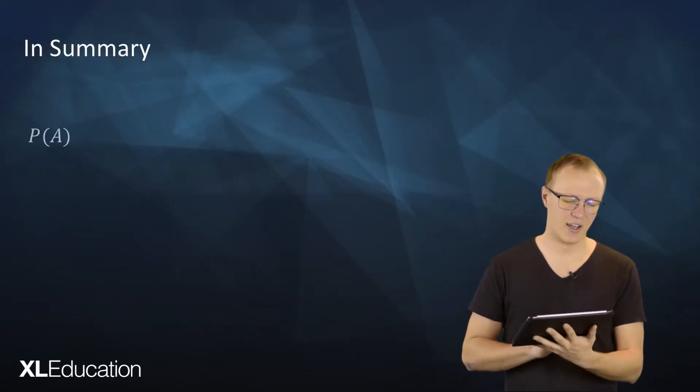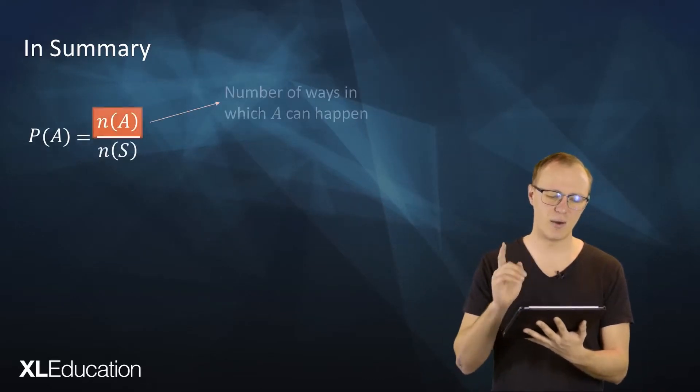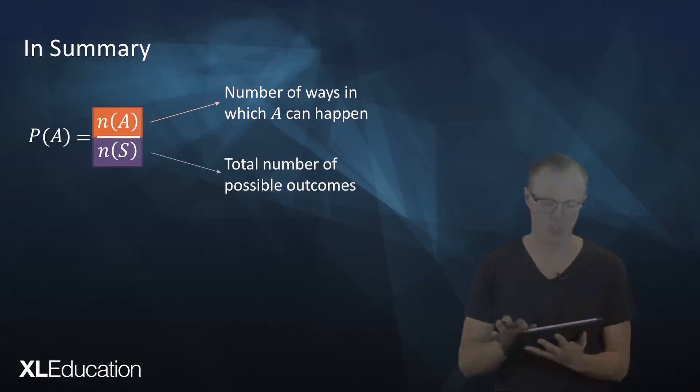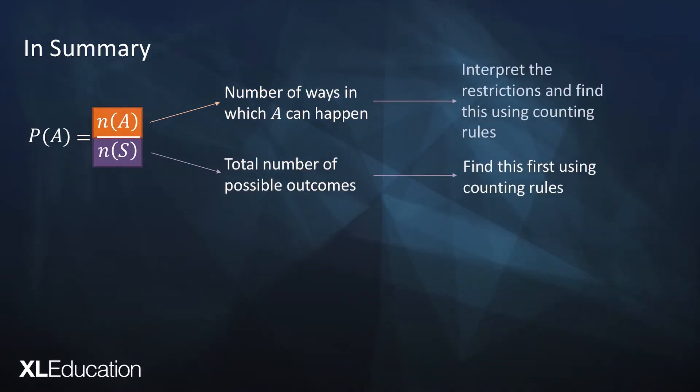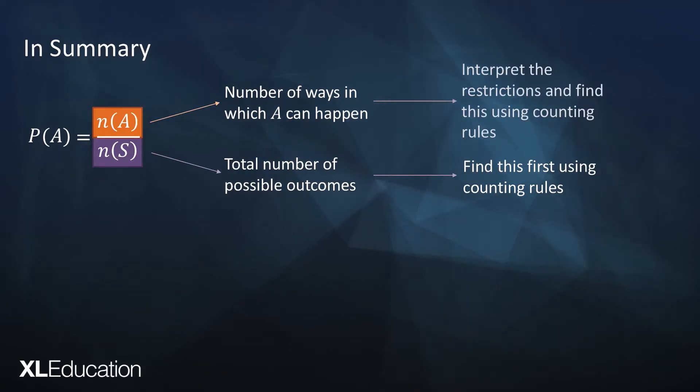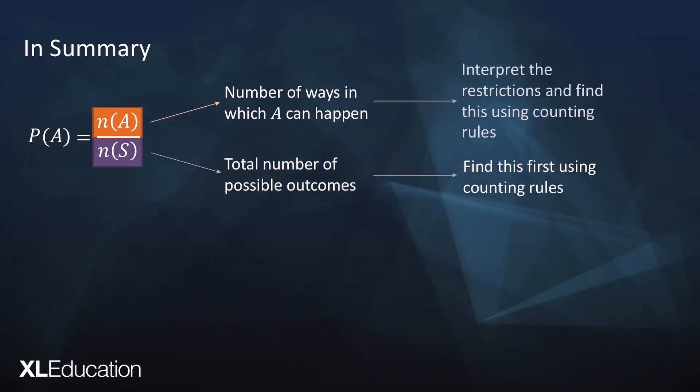To summarize: the probability of an event is the number of ways it can happen divided by the total number of possible outcomes. First use counting rules to find the size of the sample space, then interpret the restrictions in the question and find the number of ways they can happen using counting rules, then divide. There you have counting principles applied to groups, repetitions, and selections — now apply yourself, maybe form a study group, do a few repetitions of practice examples, and only you control the probability of success.